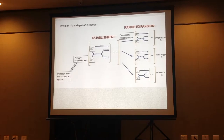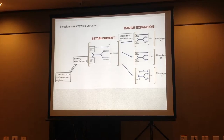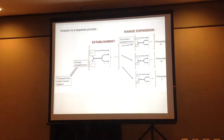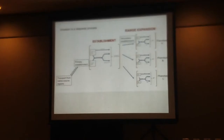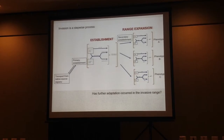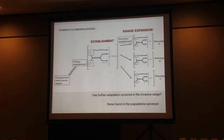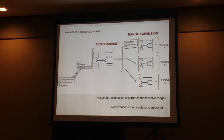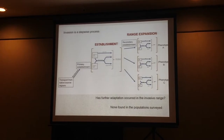However, I still needed to answer my second question. What I found previously is that there's differentiation between Oregon and Europe, which could be something occurring during the establishment period. But to figure out if there's further differentiation within Oregon during range expansion, I looked for divergence within Oregon populations. I repeated the QST-FST comparison using only Oregonian populations to see if there was any further divergence in the traits I measured. I didn't find any. So all of the divergence that had occurred happened prior to range expansion in the invasive zone, during that lag phase period.